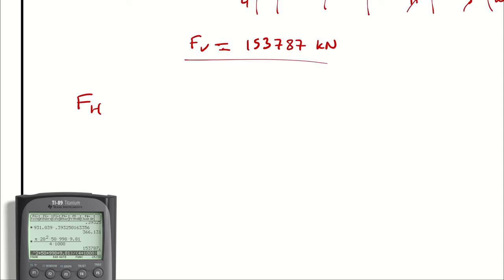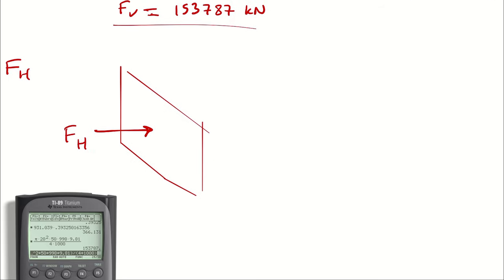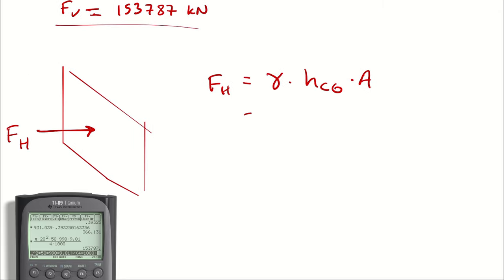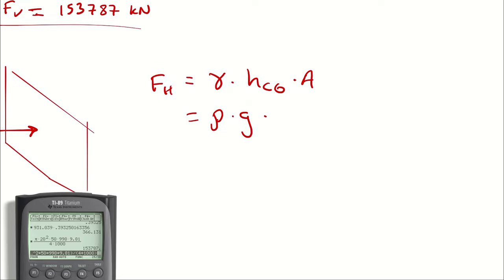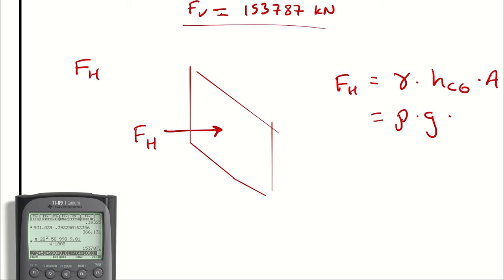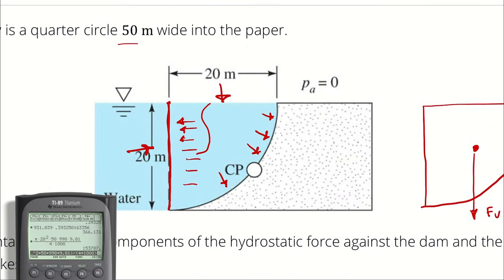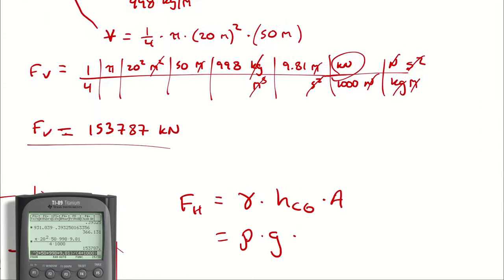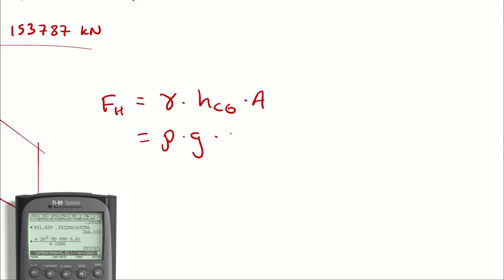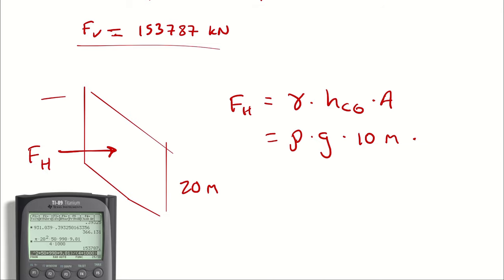For our horizontal component of force, we're imagining another gate problem that is 50 meters long and 20 meters tall. The force is just gamma times HCG times area. HCG is going to be the height from the surface of the fluid — the top of the gate in this horizontal analysis. Considering the horizontal perspective of the fluid, HCG is just half of the radius, which is 10 meters, times the area of effect: 20 meters by 50 meters.